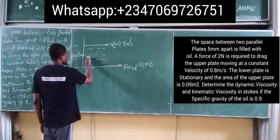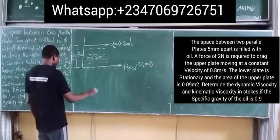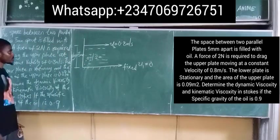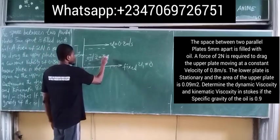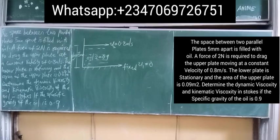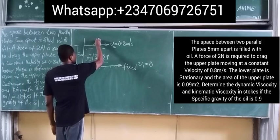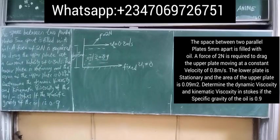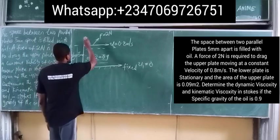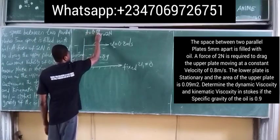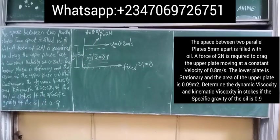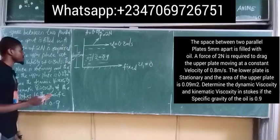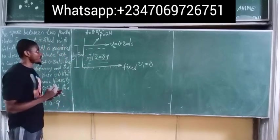The space is filled with oil and we are given the specific gravity of the oil as 0.9. A force of two Newtons is required to drag the upper plate, so the upper plate is being pulled by a force equal to two Newtons. The area of the upper plate, A, is given as 0.09 meters squared. So we know our force, our area, and all the information we need.